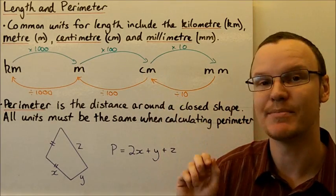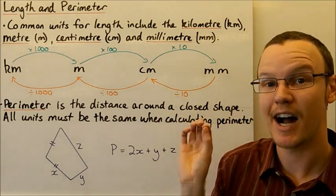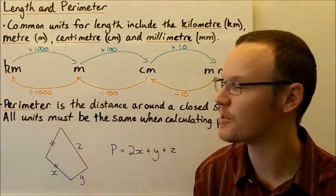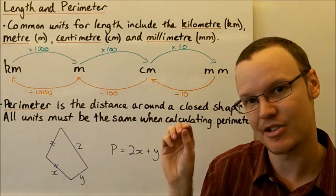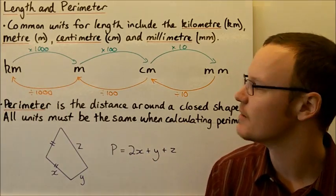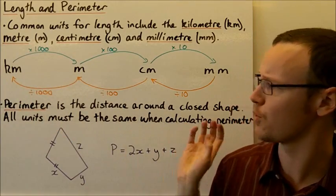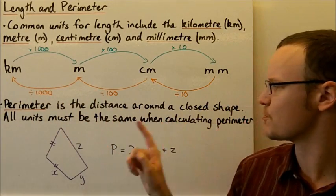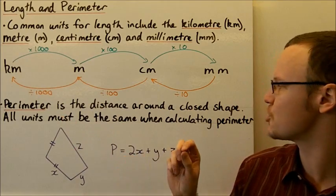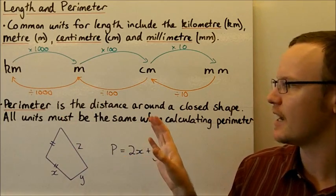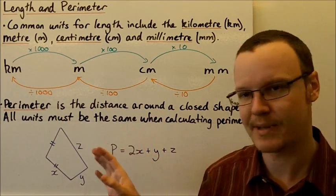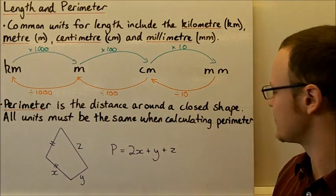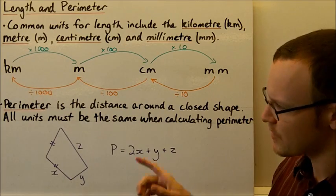Centimetre means one-hundredth of a metre, and kilometre means a thousand times a metre. Moving on to perimeter — perimeter is the distance around a closed shape, and all units must be the same when we're calculating the perimeter.